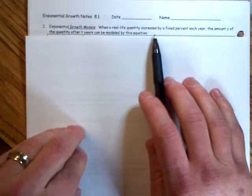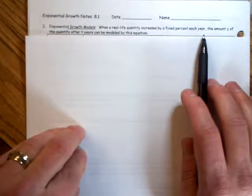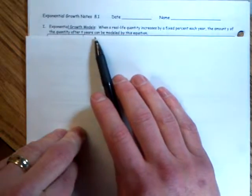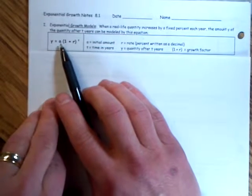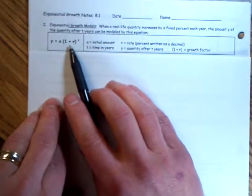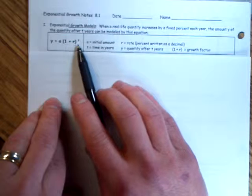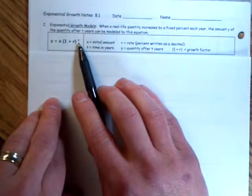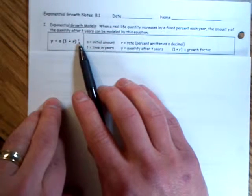When a real-life quantity increases by a fixed percent each year, the amount y of the quantity after t years can be modeled by this equation. You can see we have y equals a, the initial amount, times 1 plus r, the annual interest rate, in parentheses, raised to t, the number of years after you start.